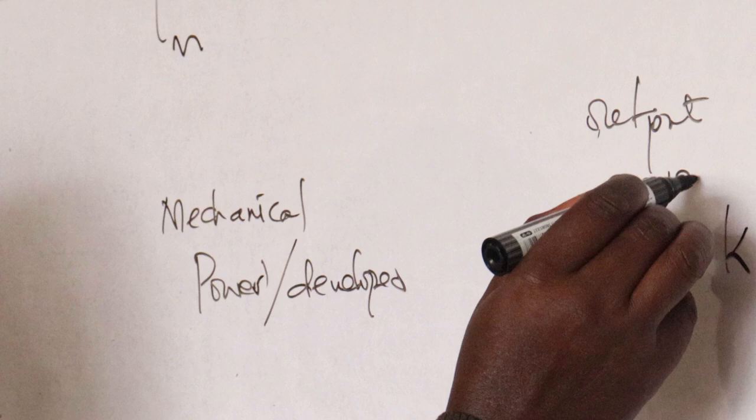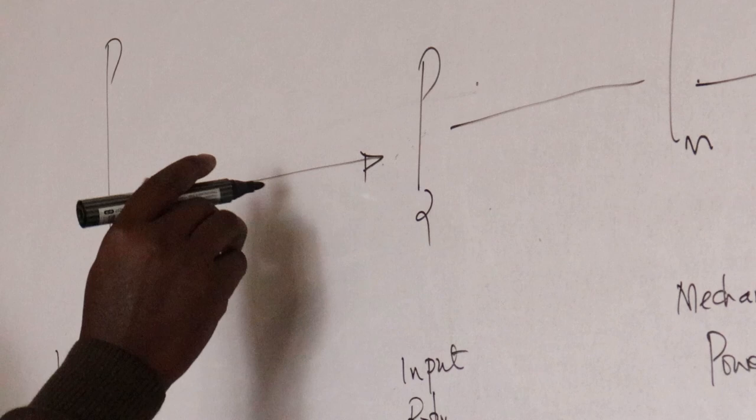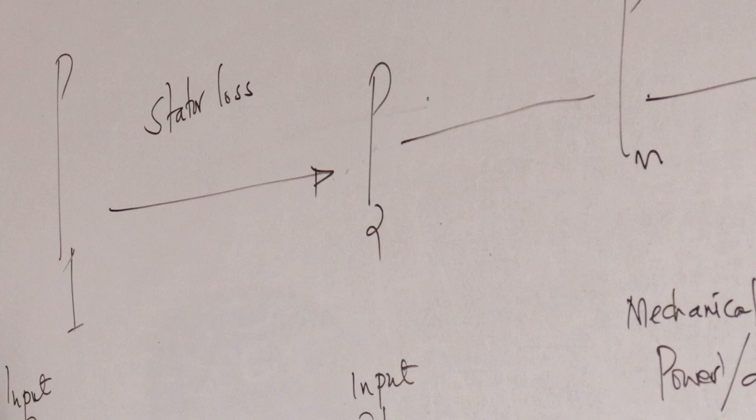Those are the stages when you start from the source — you have the input. But then between P1, the input power, to Pout, we have what you call stator losses. In stator losses, we have two types.